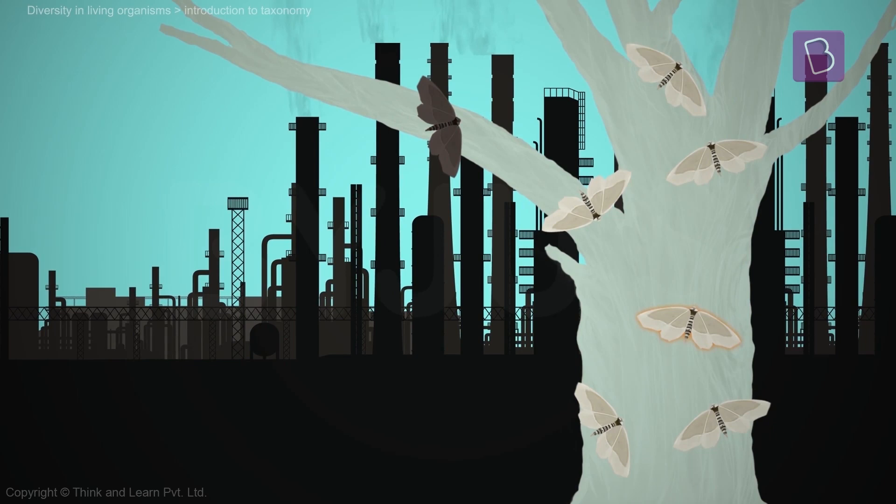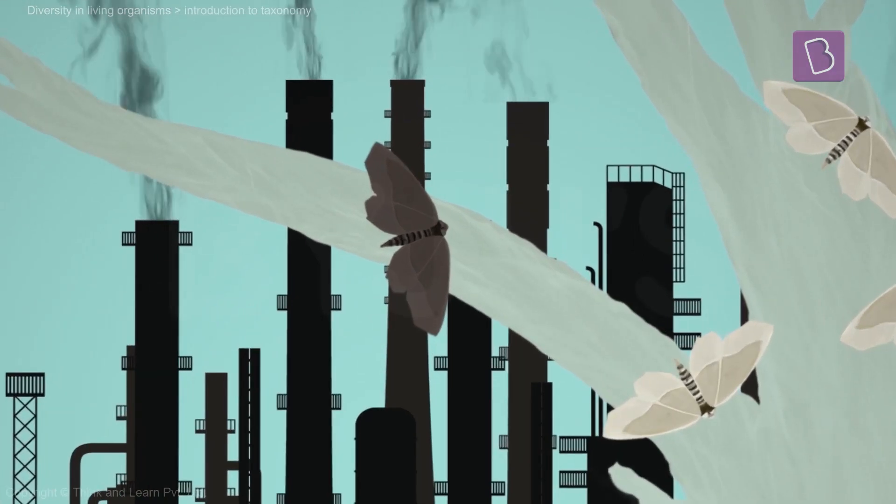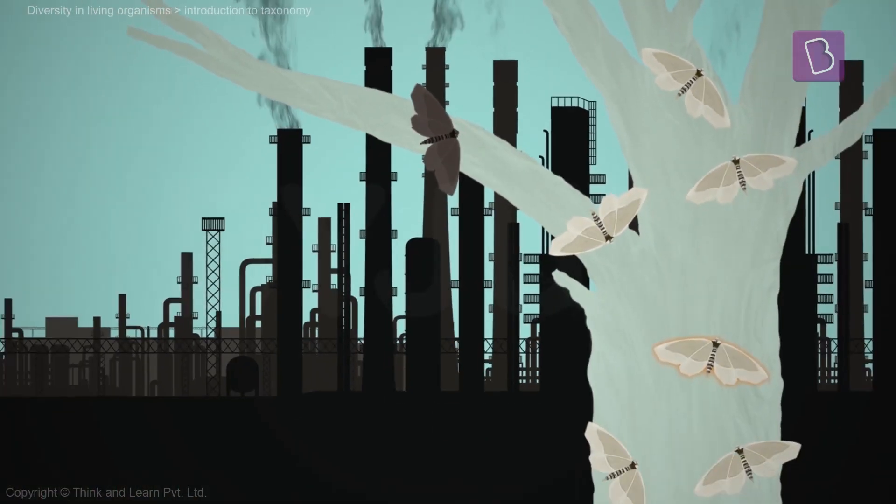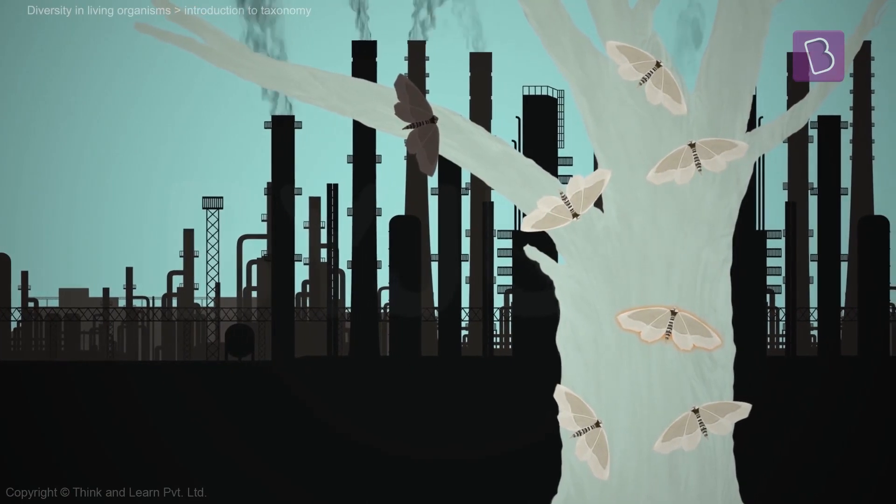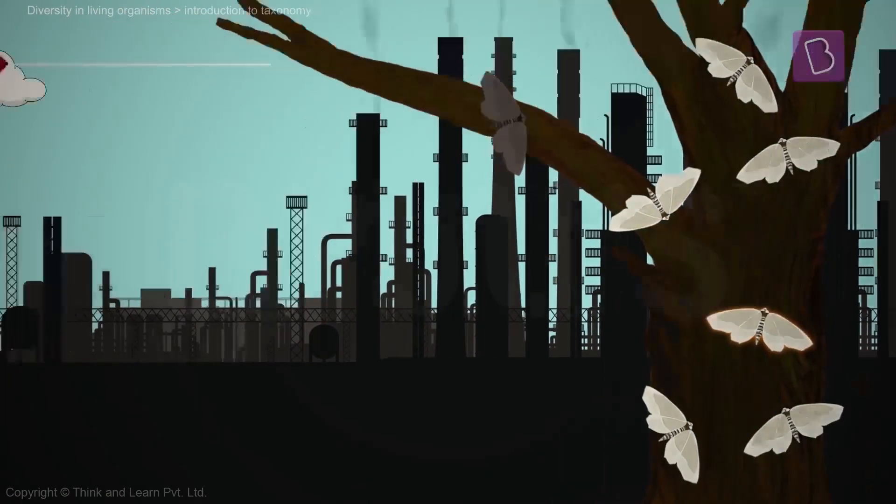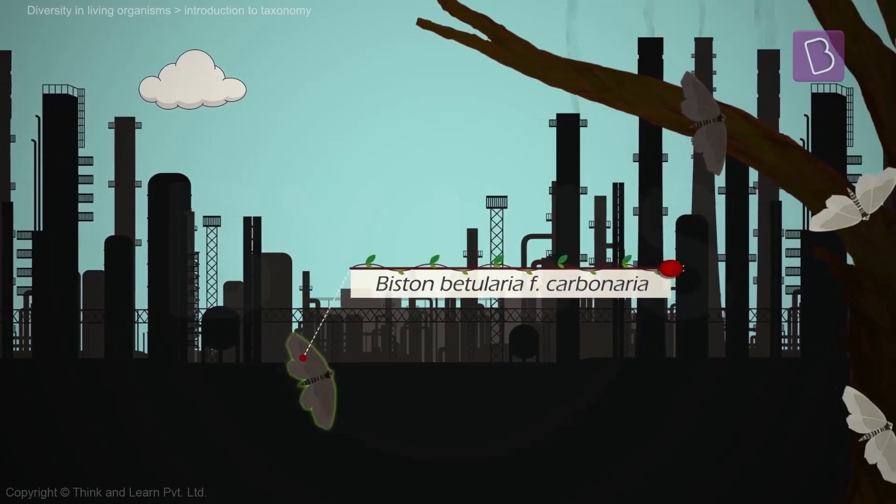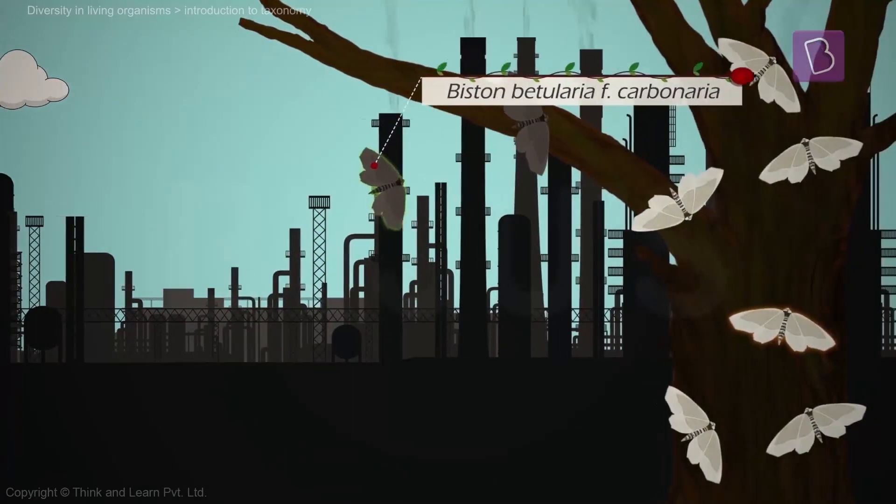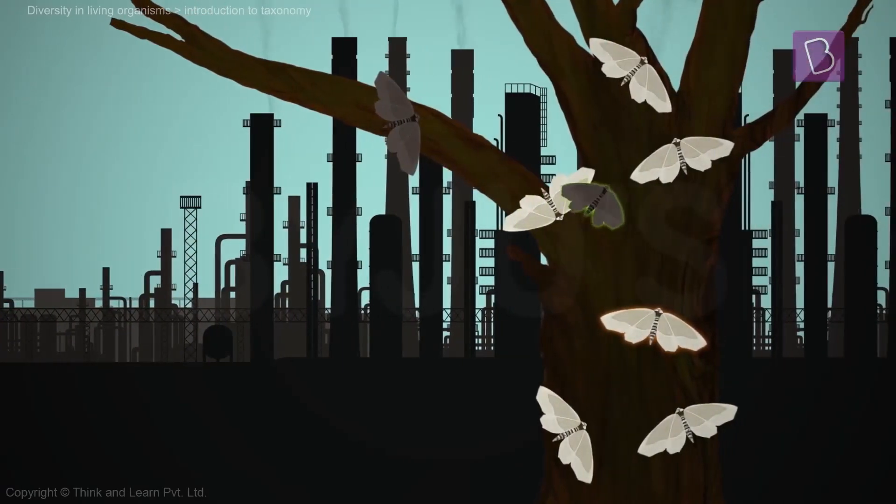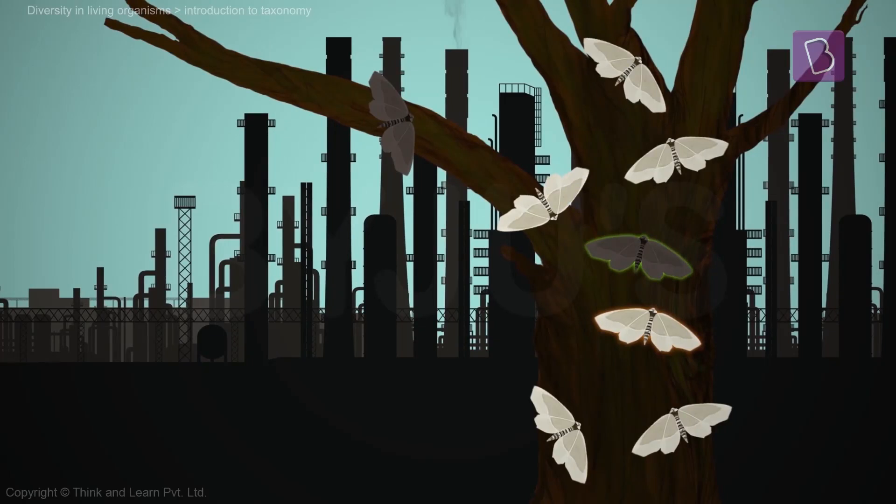But all of a sudden, things start getting really dark around here. With all the coal-powered factories spitting out soot into the air, the trees go from looking like this to looking like this. Mr. Moth has a distant cousin, Biston betularia carbonaria, who looks like this. Now, as time passes, Mr. Moth can see that there are more moths who look like his cousin than like him.